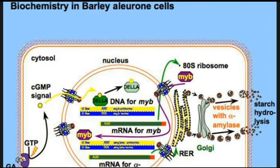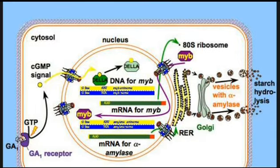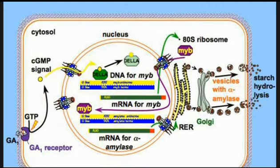How does a germinating seed get the starch hydrolyzed and converted into glucose to provide energy? This is a signaling pathway for this — we can call it the gibberellic acid MYB pathway.